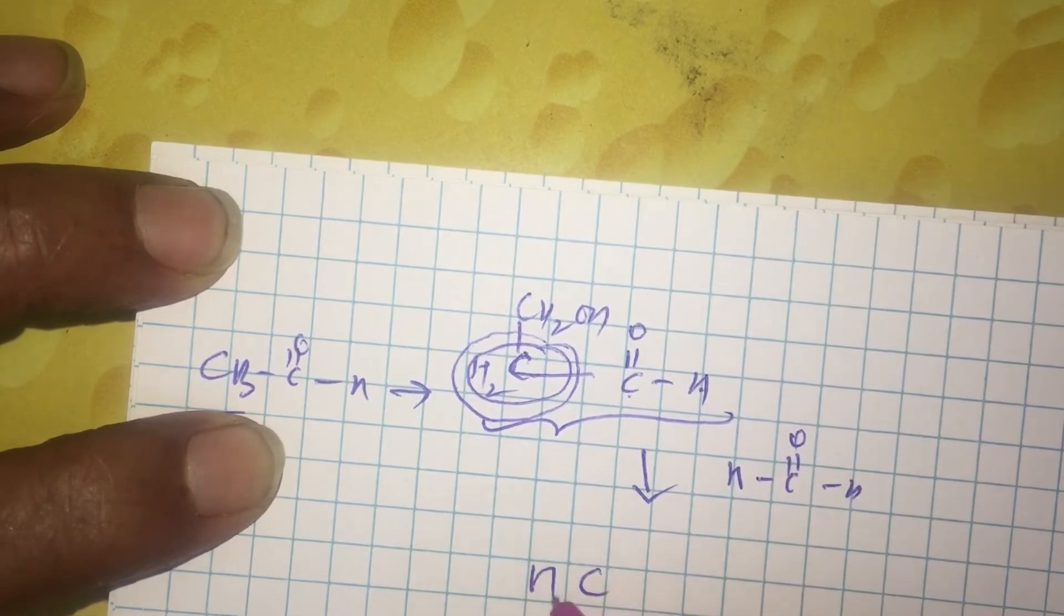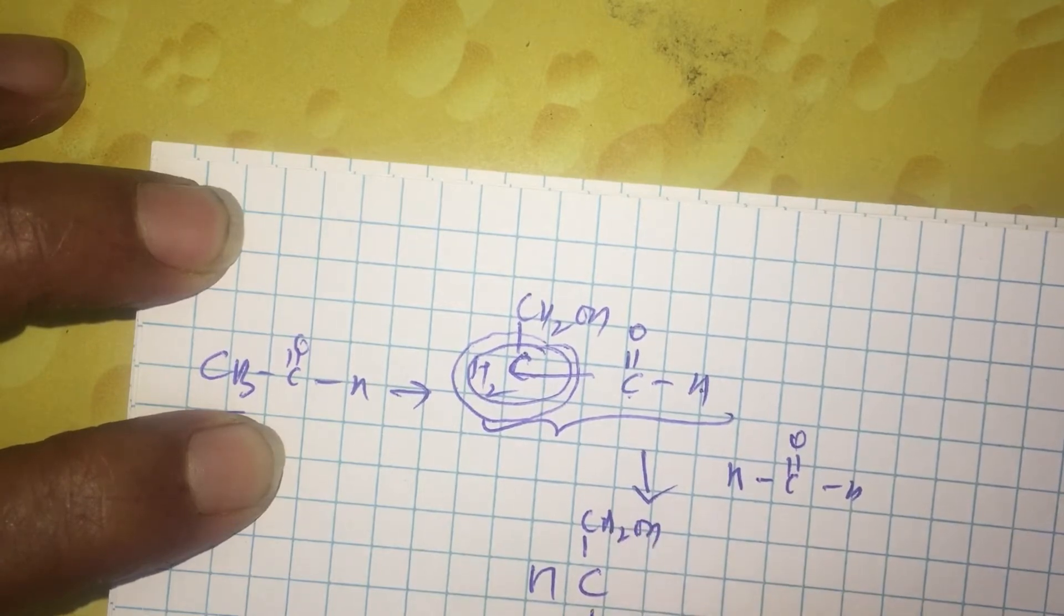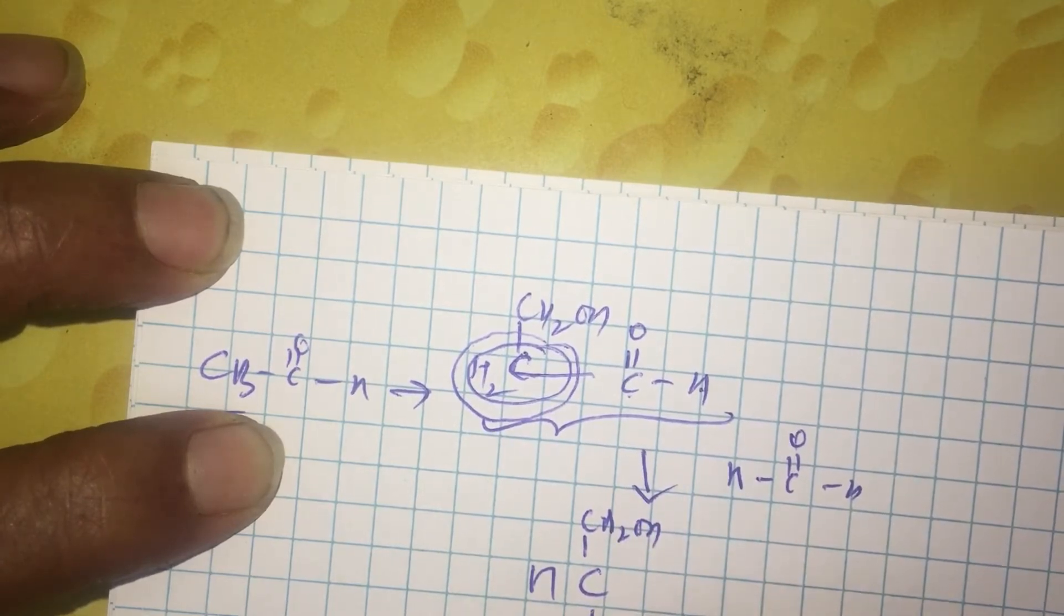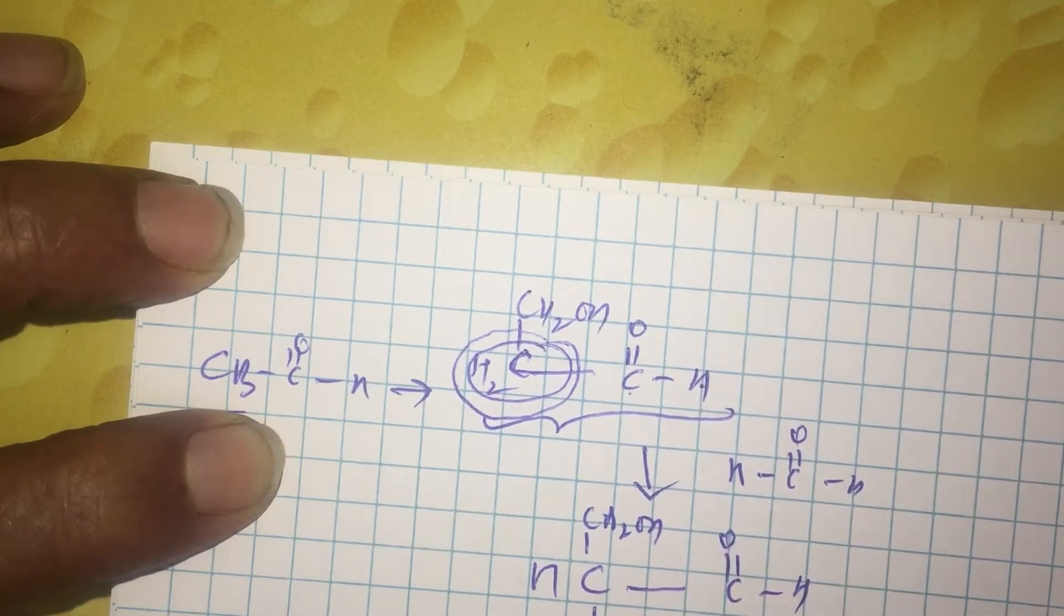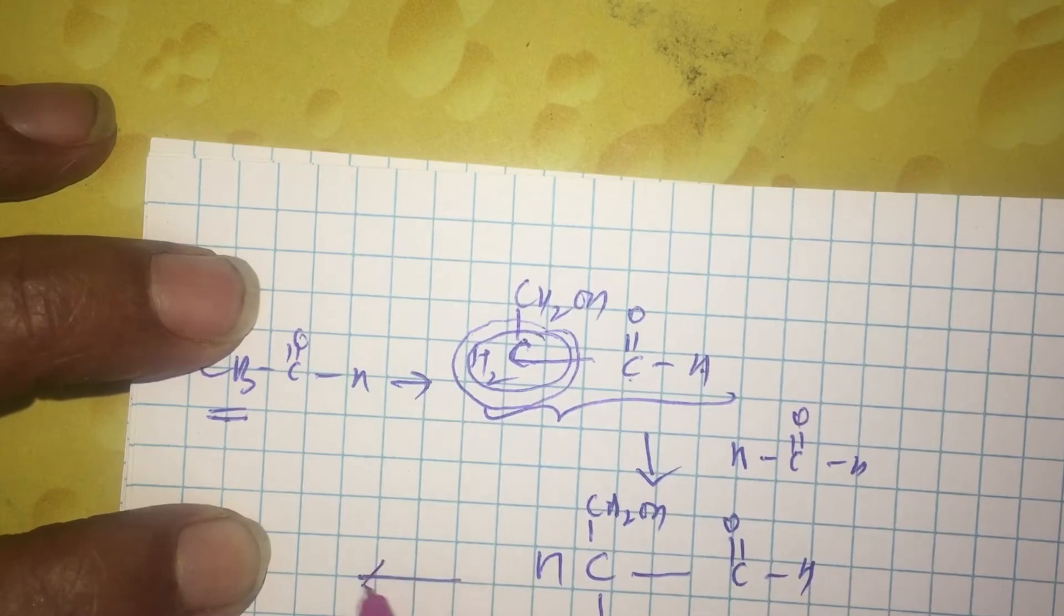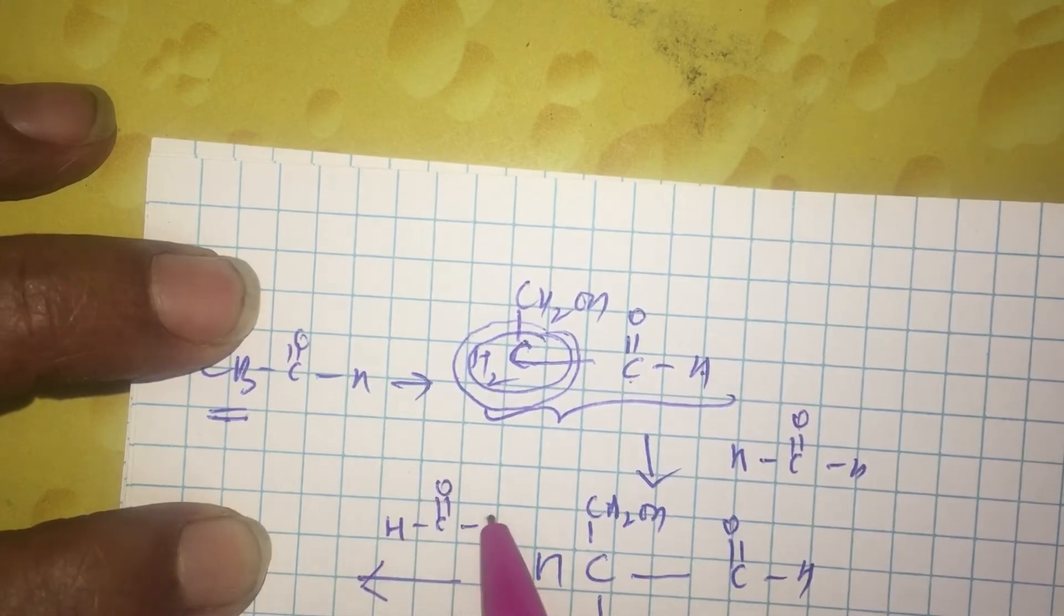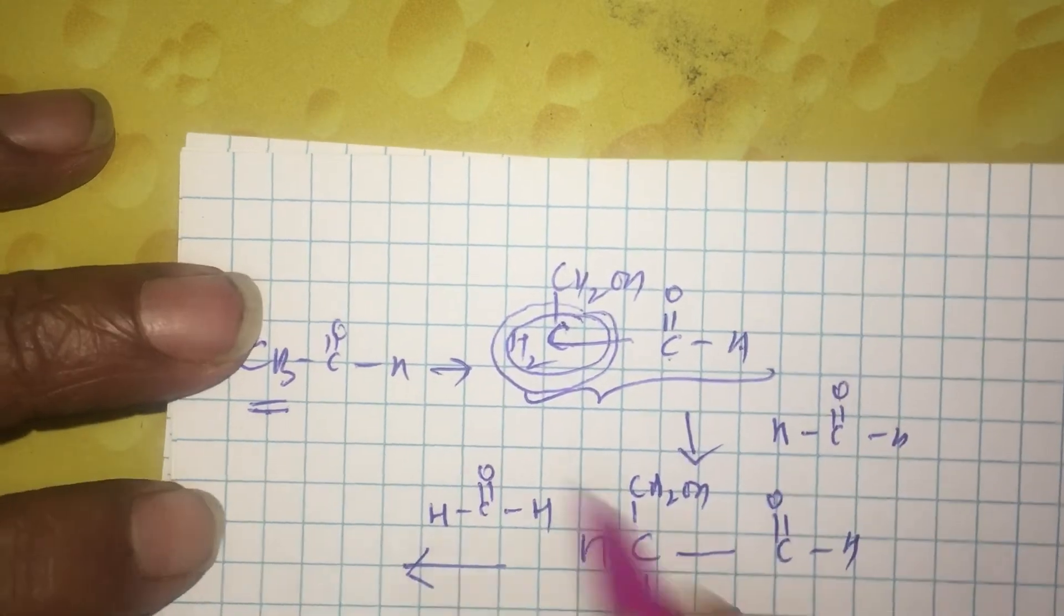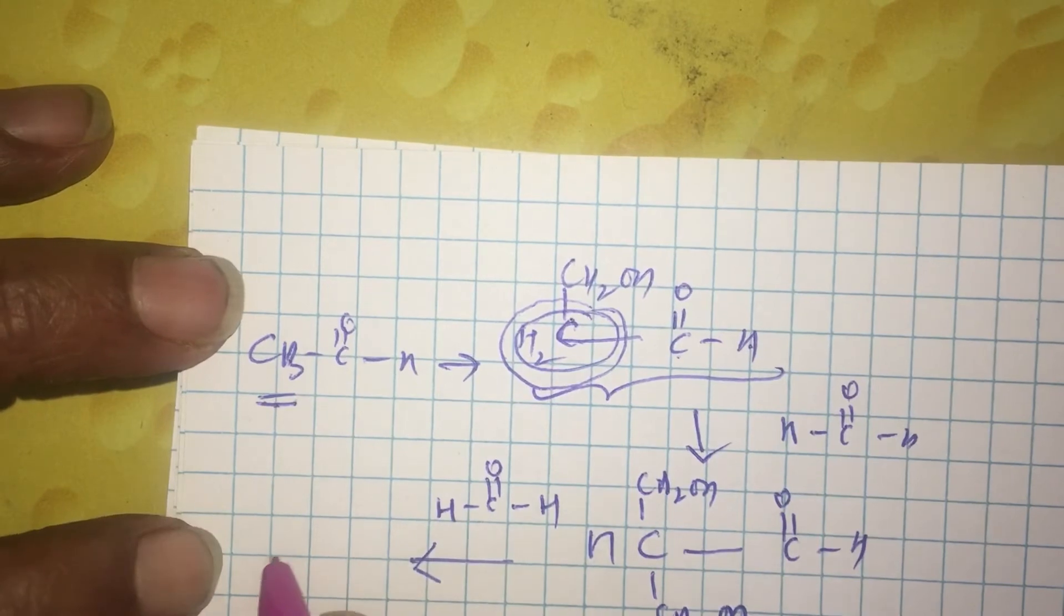You will be getting CH with CH2OH already there, new CH2OH and this C=O. So, the second cross-aldol product is this.